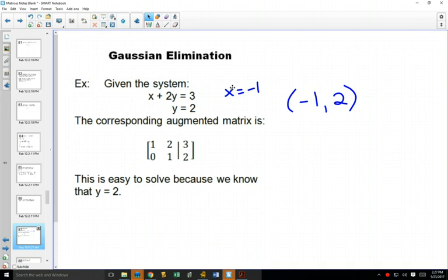So if you graph these two things, they'd both be lines. y equals 2 is a horizontal line and x plus 2y equals 3 is a regular line with a slope of negative 1 over 2. If you graph that, they would intersect at the point negative 1 comma 2.